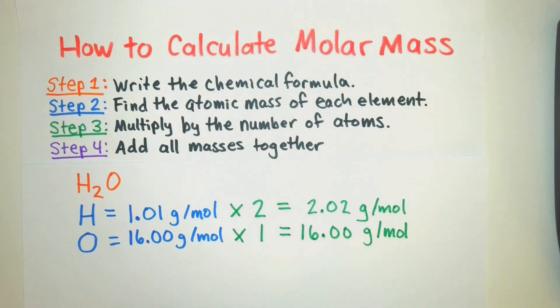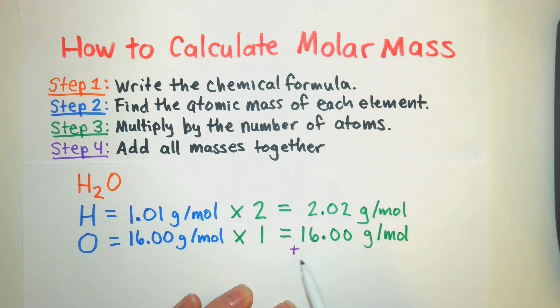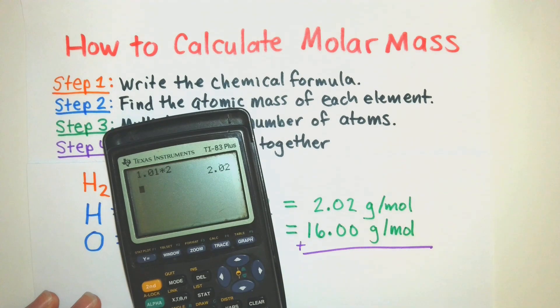Alright, the final step is we're just going to add up all of the masses together. So just going to add this together. This is a pretty easy one just because some of them can get complicated. We'll put them in the calculator.